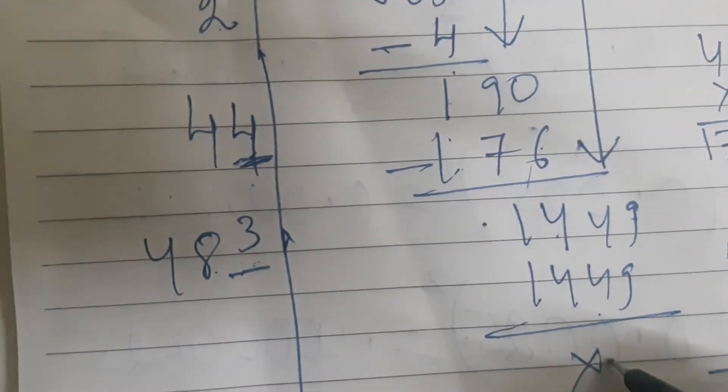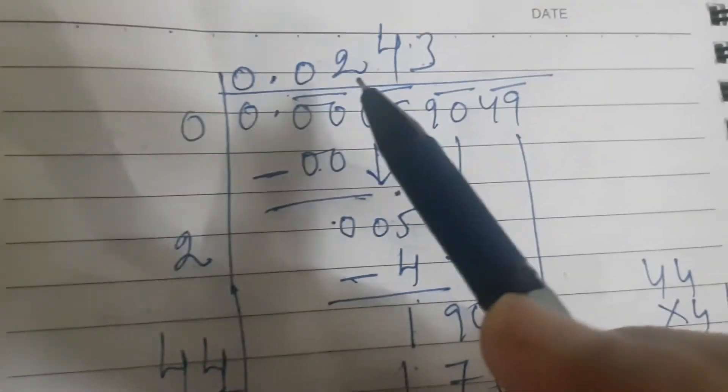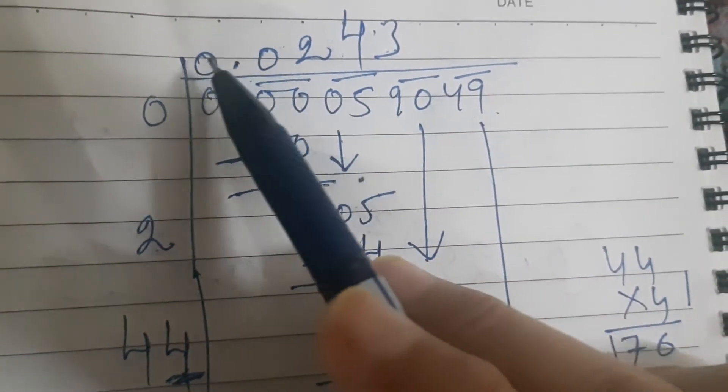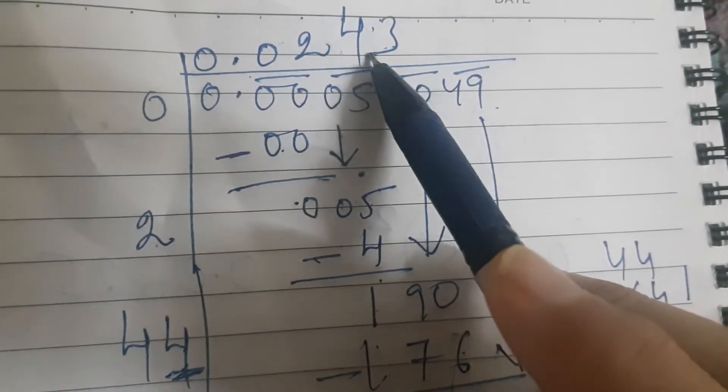So the answer here is coming to be 0. So this means the square root of the given decimal number is 0.0243.